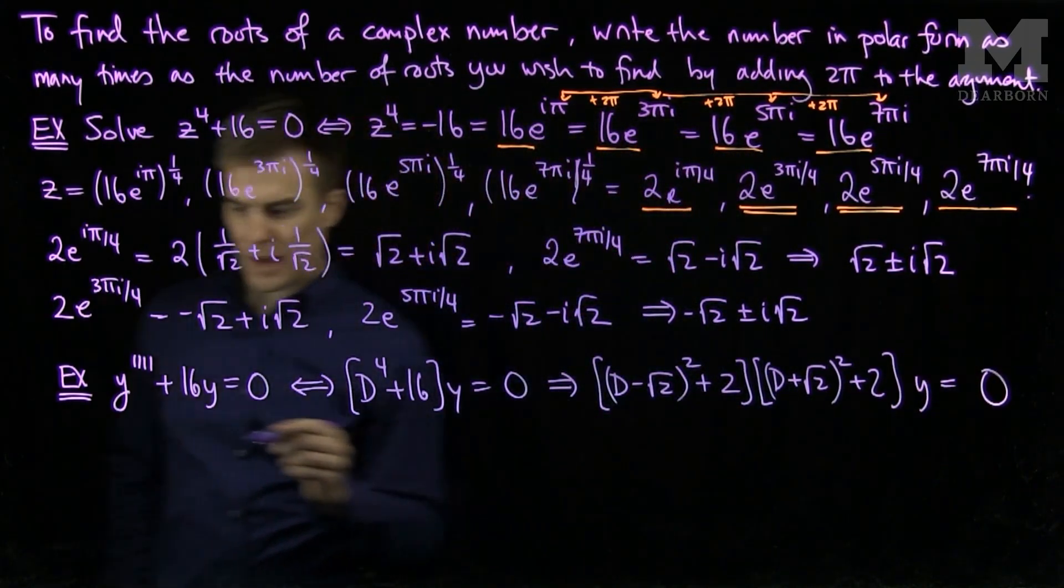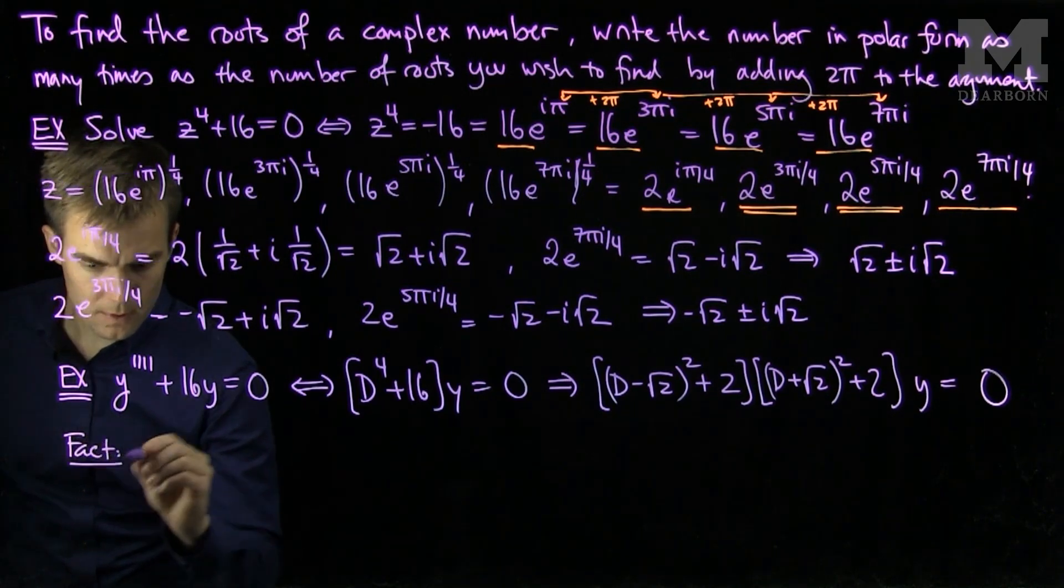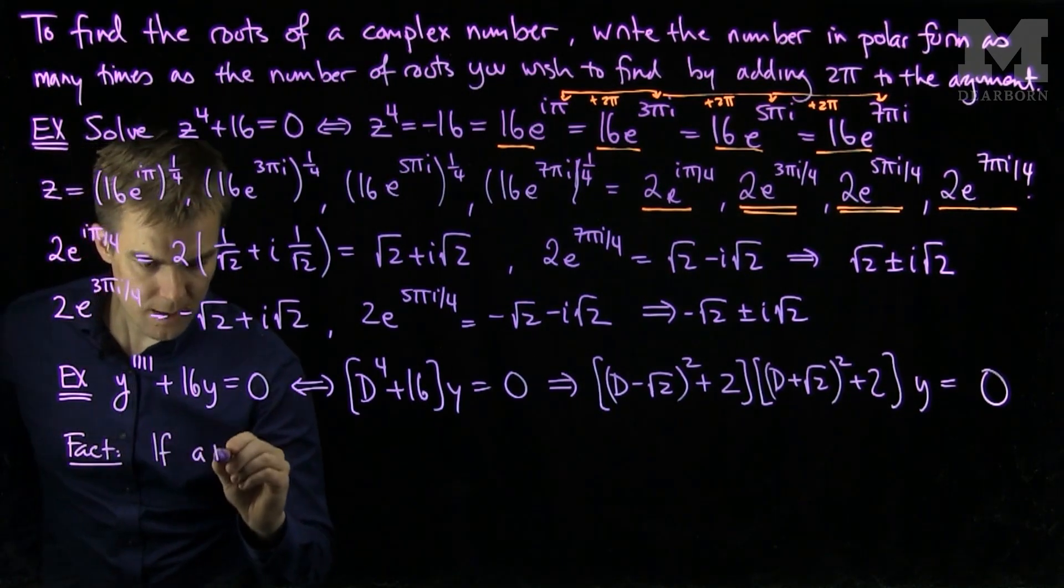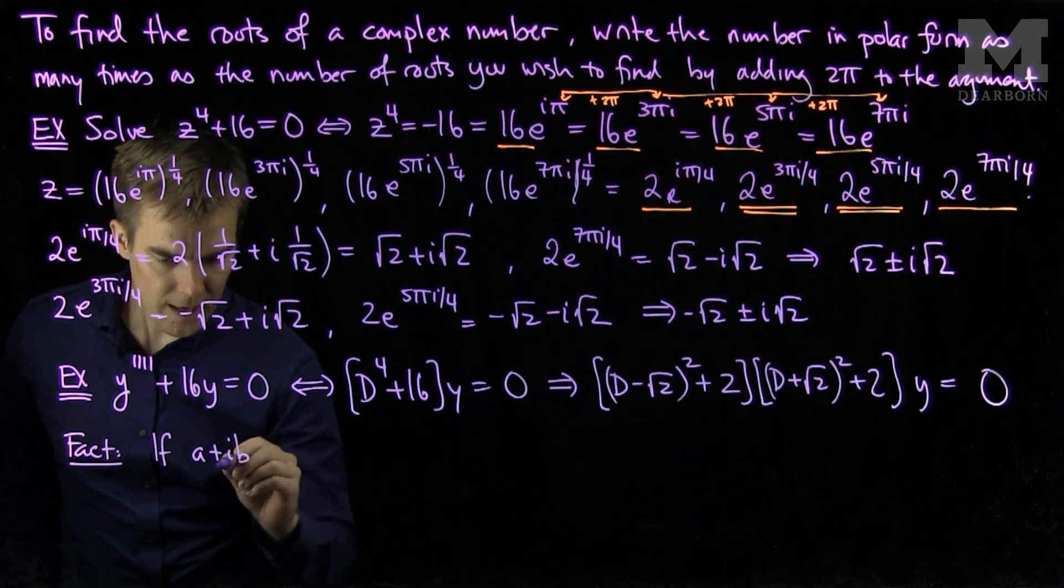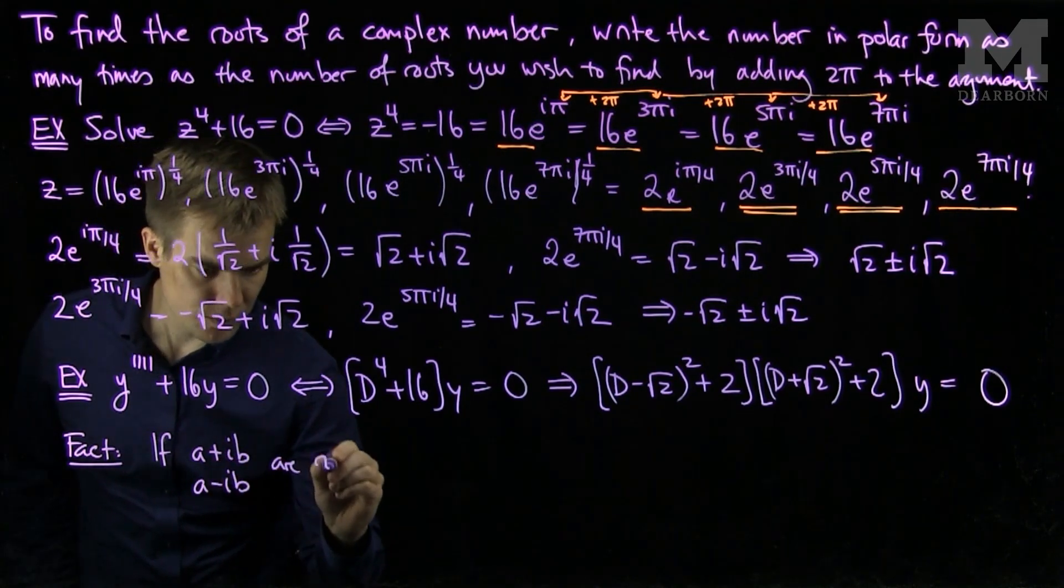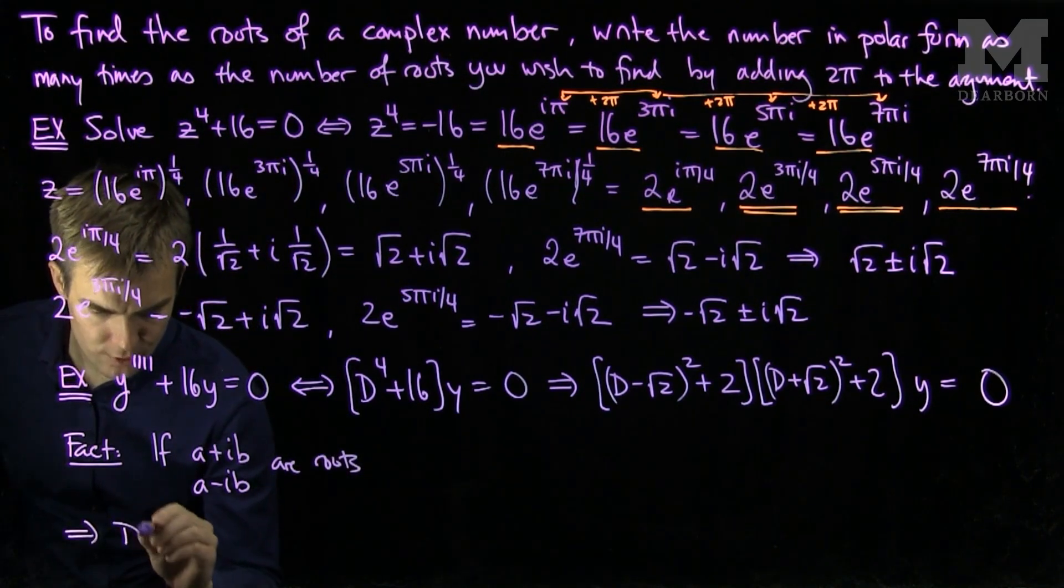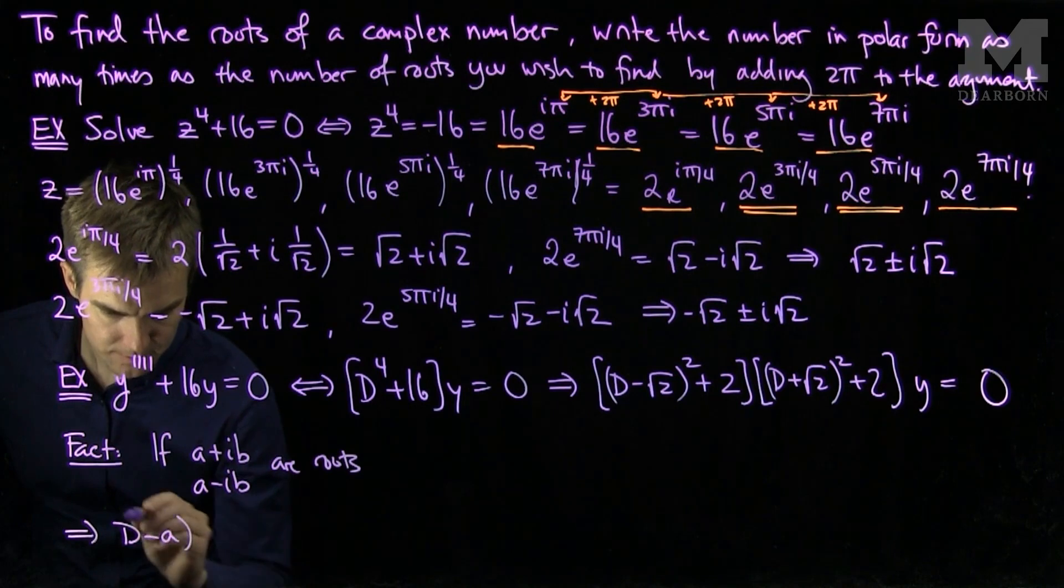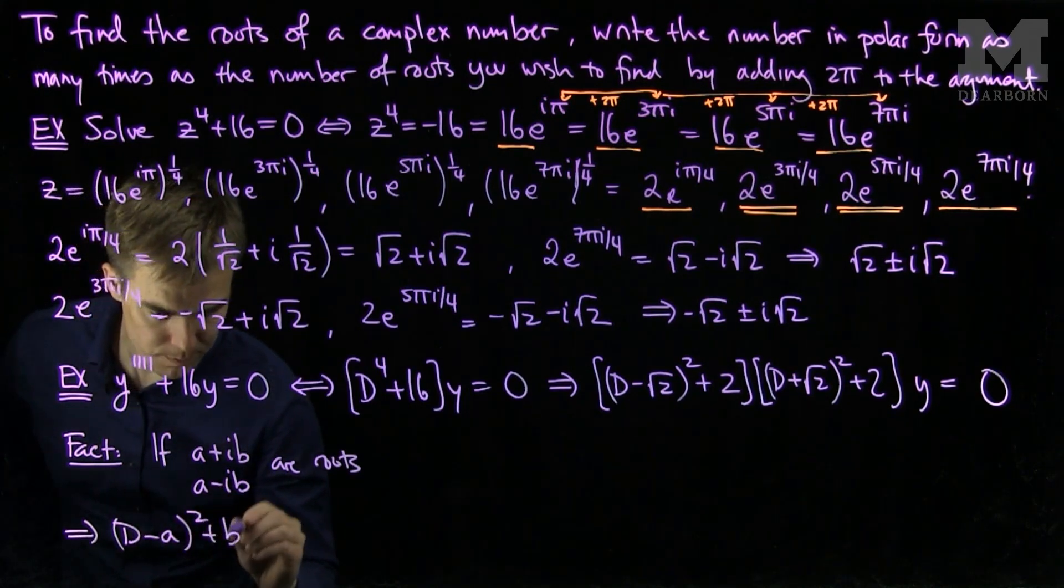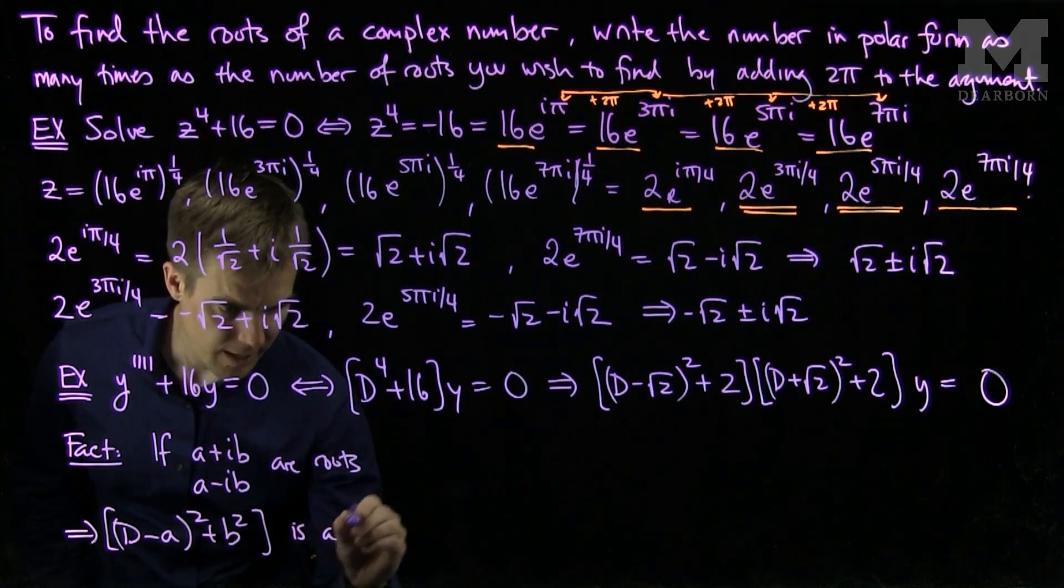This comes from the fact that if a plus ib and a minus ib are roots, that implies that we have a quadratic factor of d minus a squared plus b squared, and our polynomial differential operator is a factor.